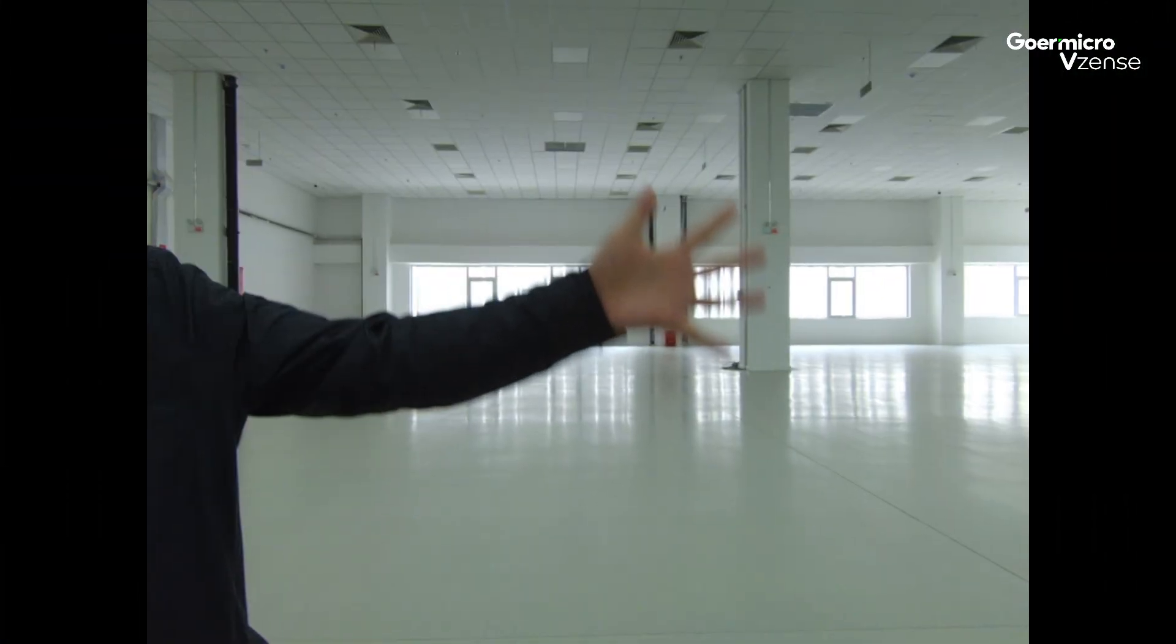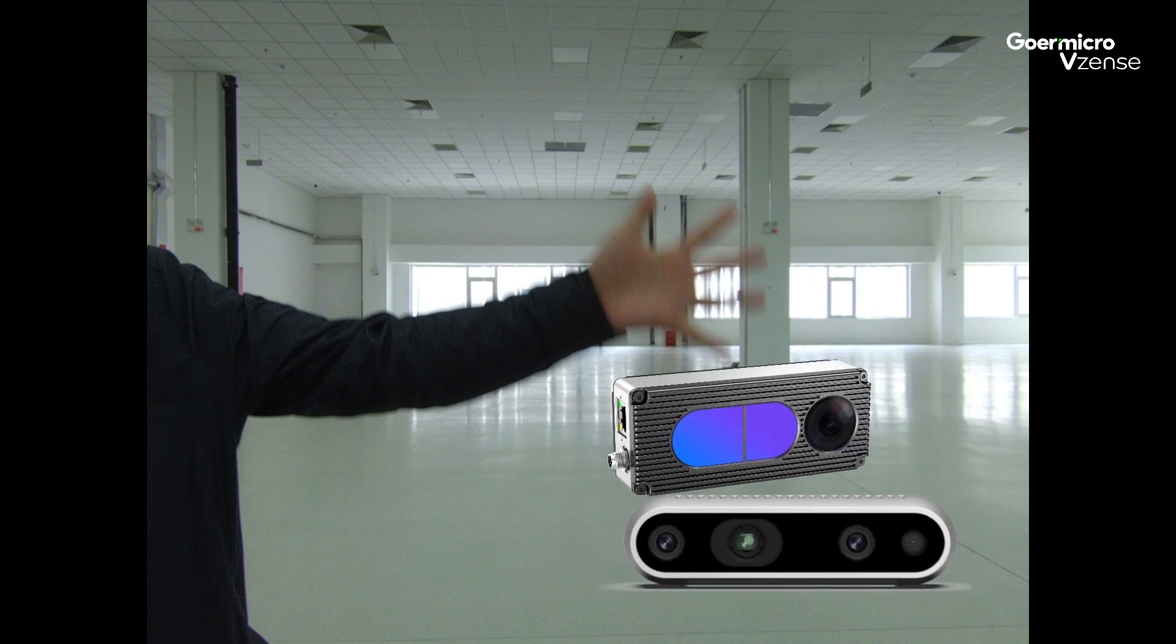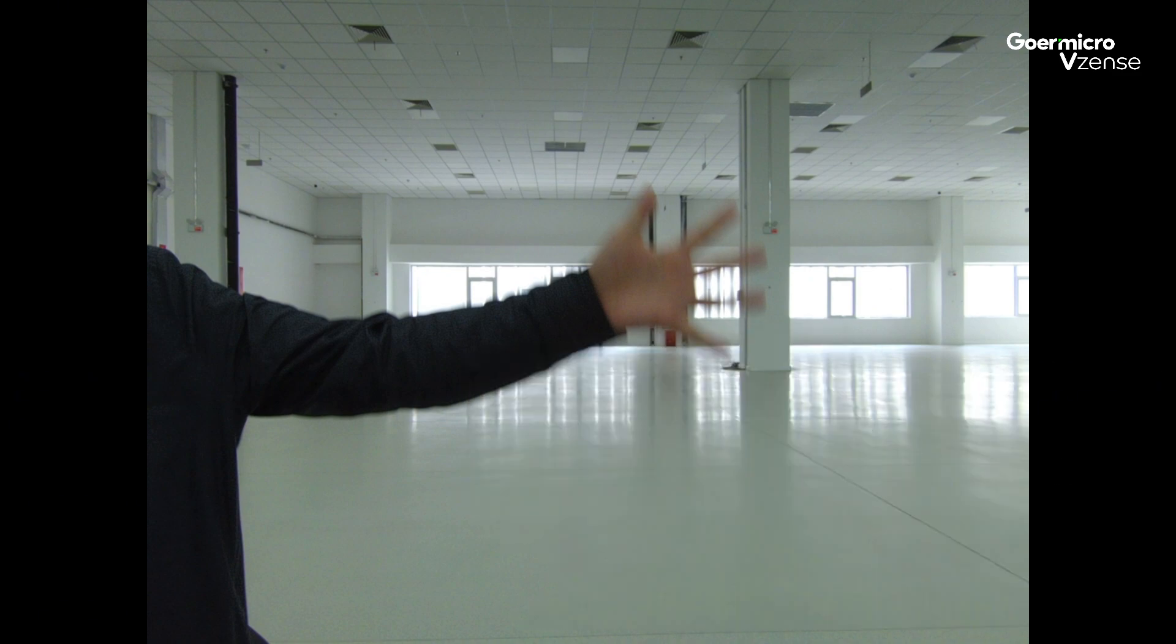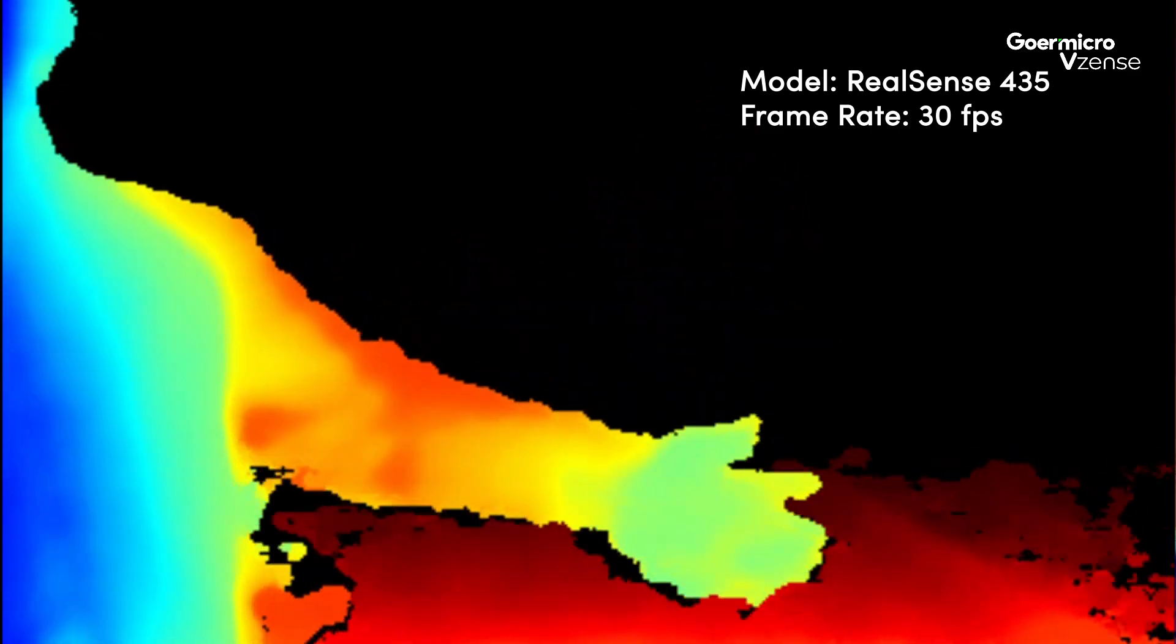The first test scenario involves a fast hand wave. We used an Intel RealSense camera with the Vzents NYX camera. Let's take a look at their respective depth map performances.